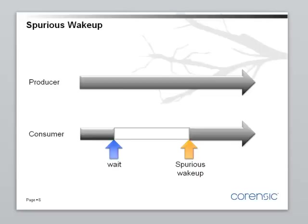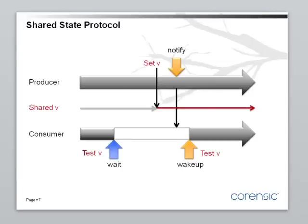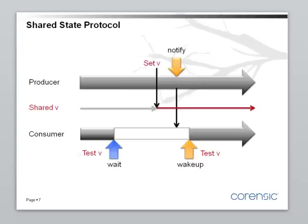It's pretty amazing that this primitive condition variable can be used to create very reliable protocols of communication. One such protocol is based on adding additional state to the condition variable. Here we have a shared state, a variable v, and the first change is that the consumer, before calling wait, will actually test v. This eliminates the problem of the consumer being too late and missing a notification — because if the producer has already set v and sent the notification, when the consumer checks, it tests variable v before calling wait, and if it's true, it will just proceed without calling wait.